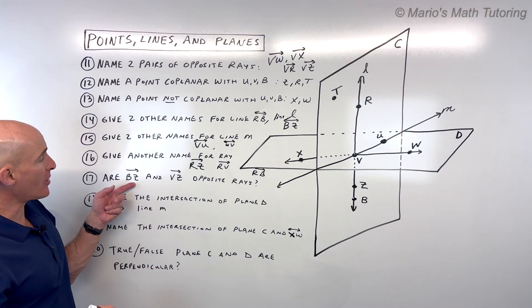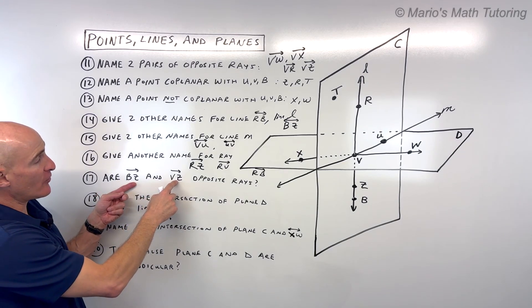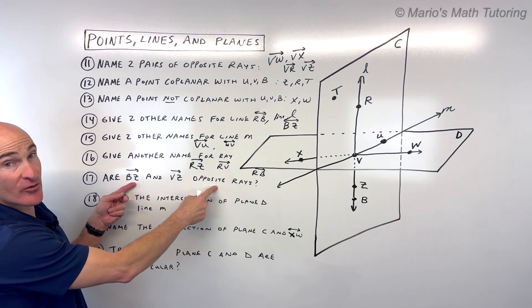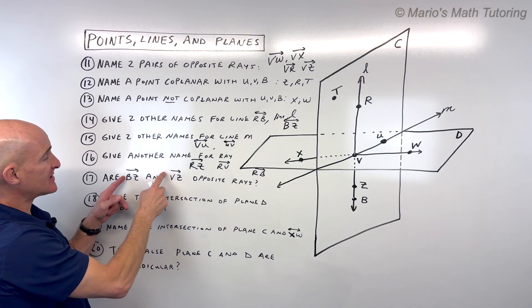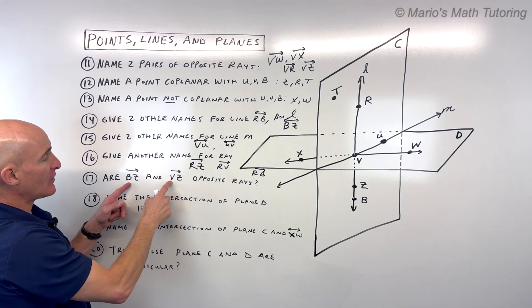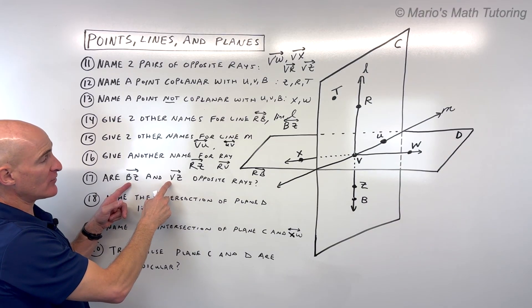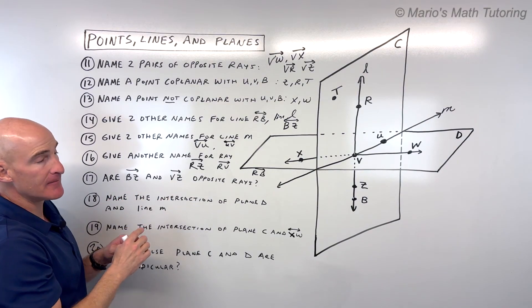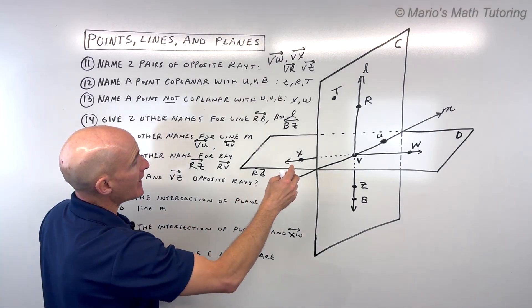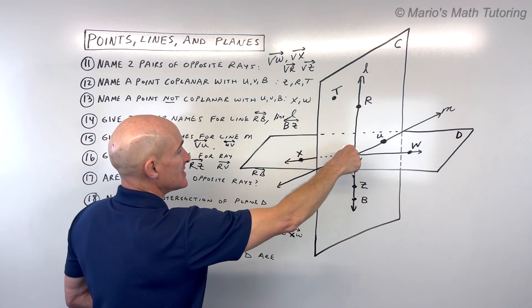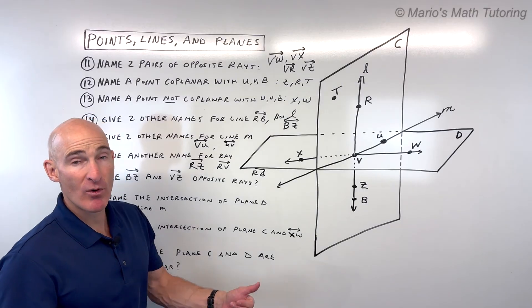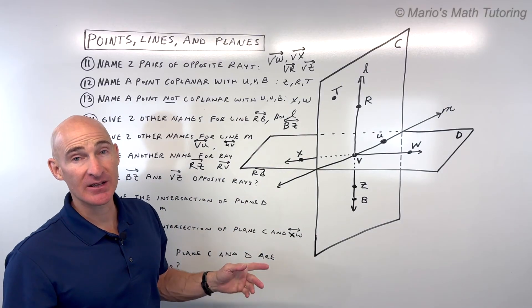Number 17, are ray BZ and ray VZ opposite rays? Without even looking at the diagram, I can see that they don't have the same starting point. It's called the endpoint. They would have to have that same endpoint. So right away, without even looking at the diagram, no, they're not opposite rays. If I look at the diagram, BZ is going this way, VZ is going this way. A lot of students will say one's going up, one's going down, they're opposite.